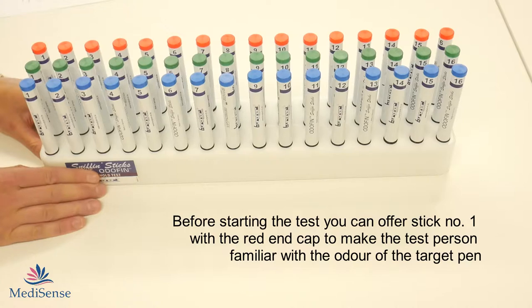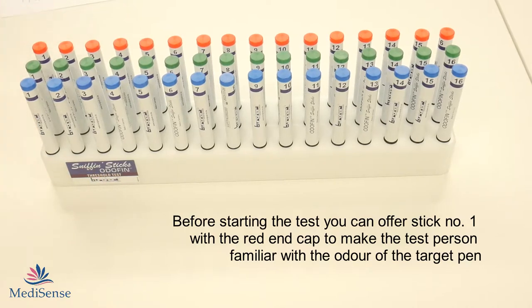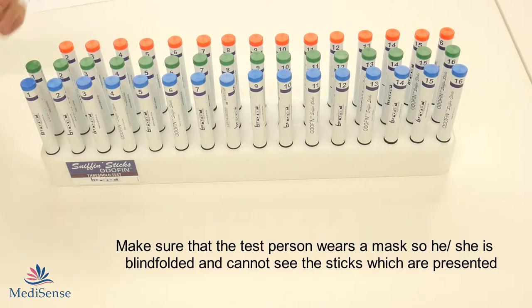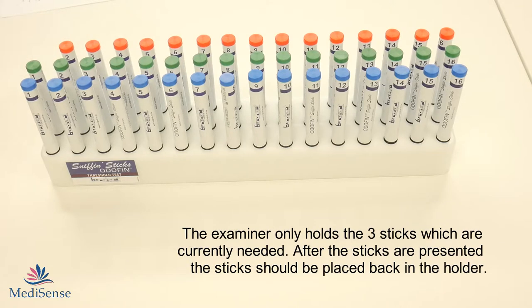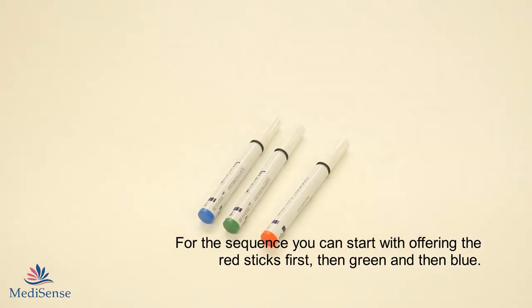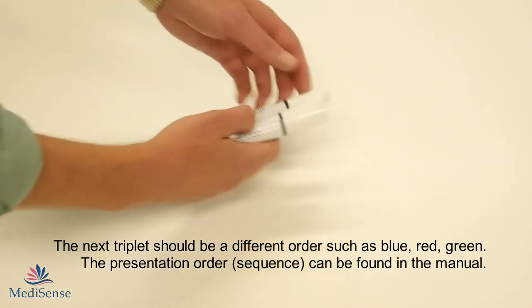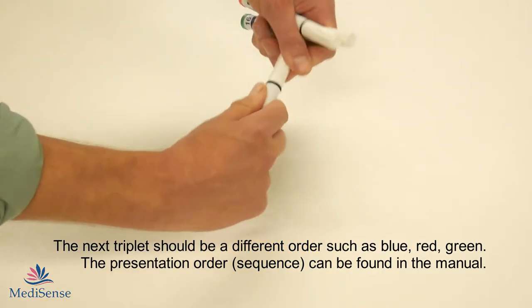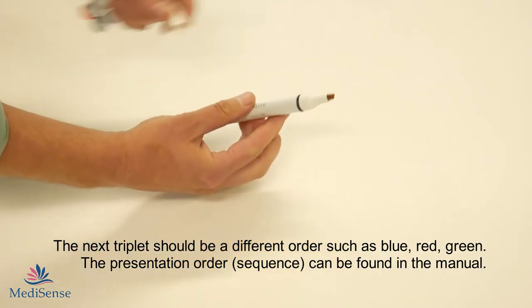When starting the test, it can be useful to offer the red number 1 to the test person so he can get familiar with the concentration and which odor he has to detect. With the threshold test each time you offer 3 triplets with the red pen being the target. The other 2 don't have odor.